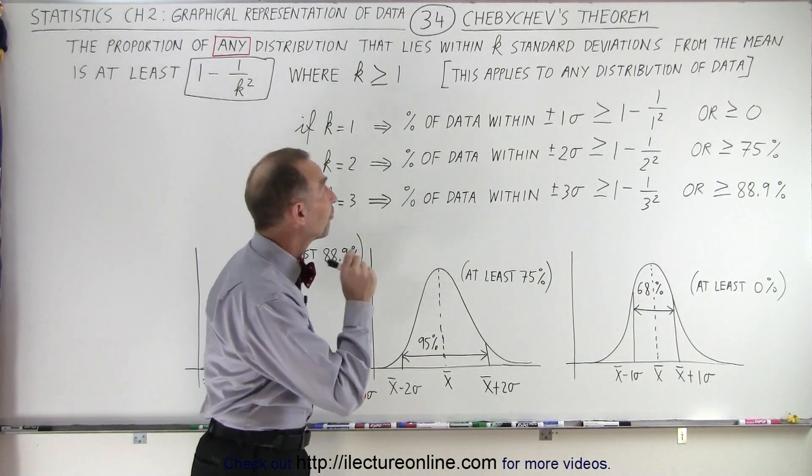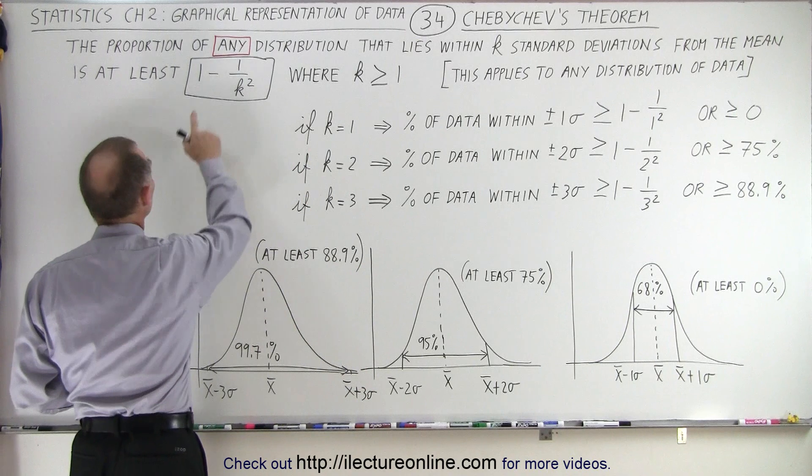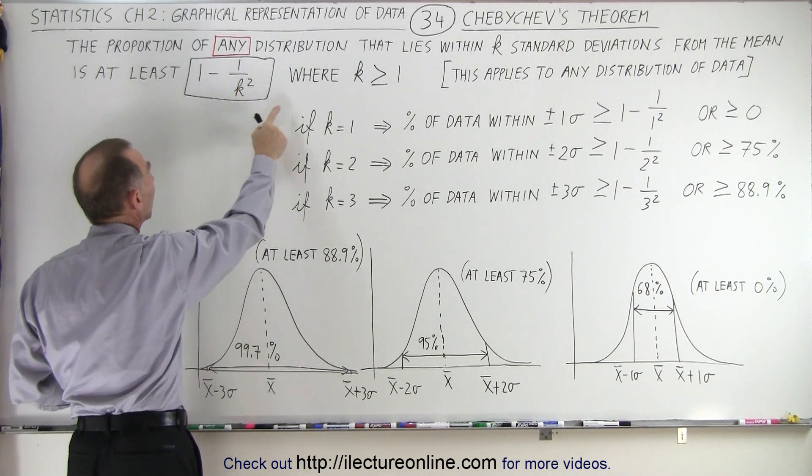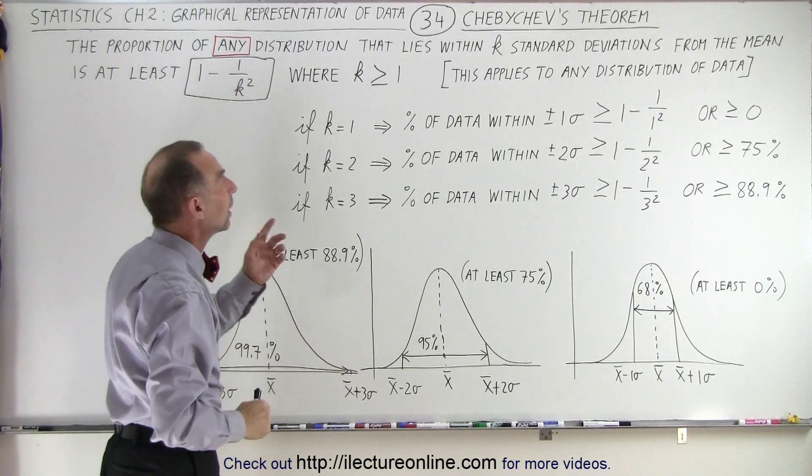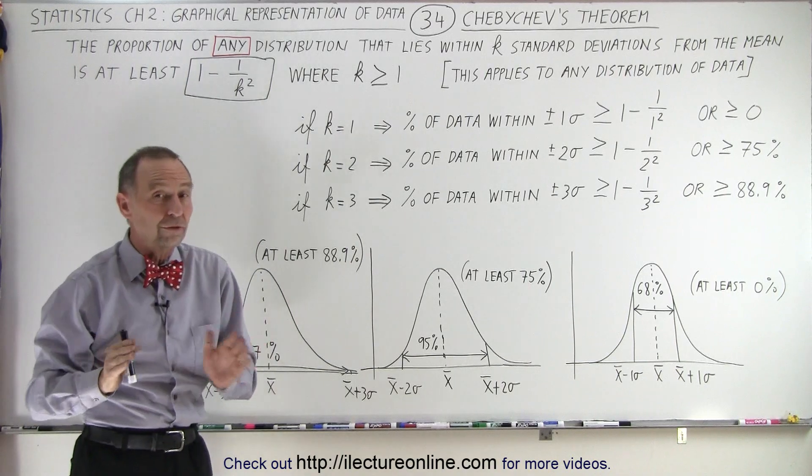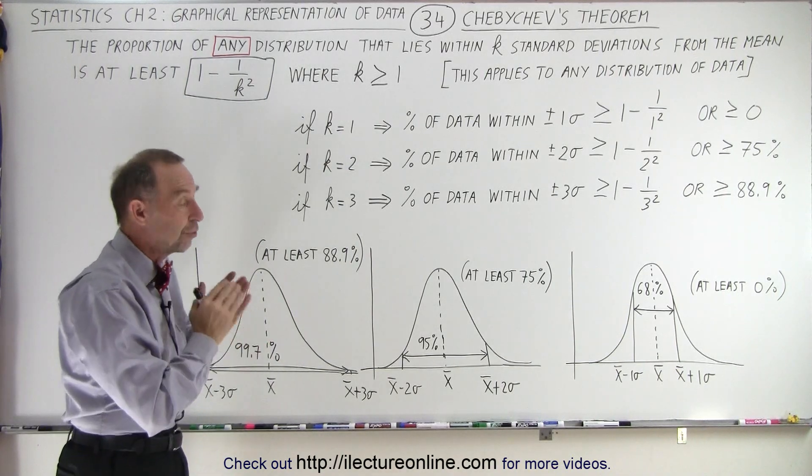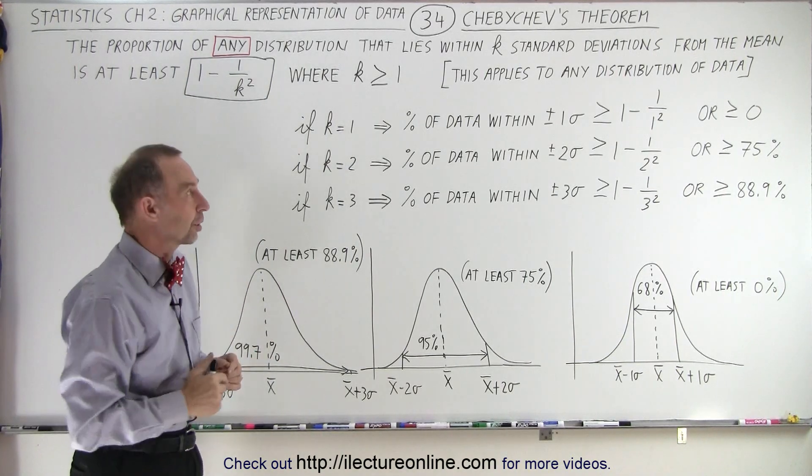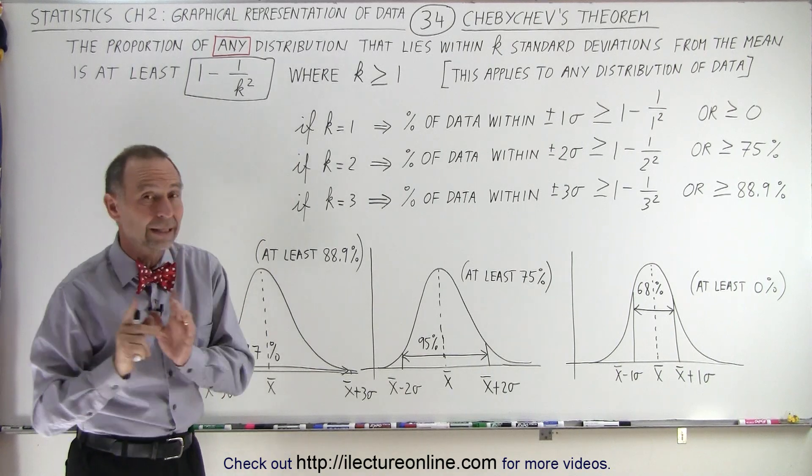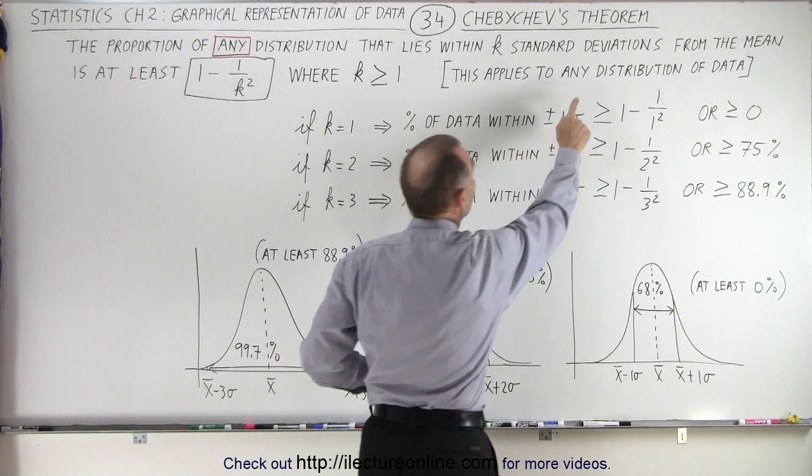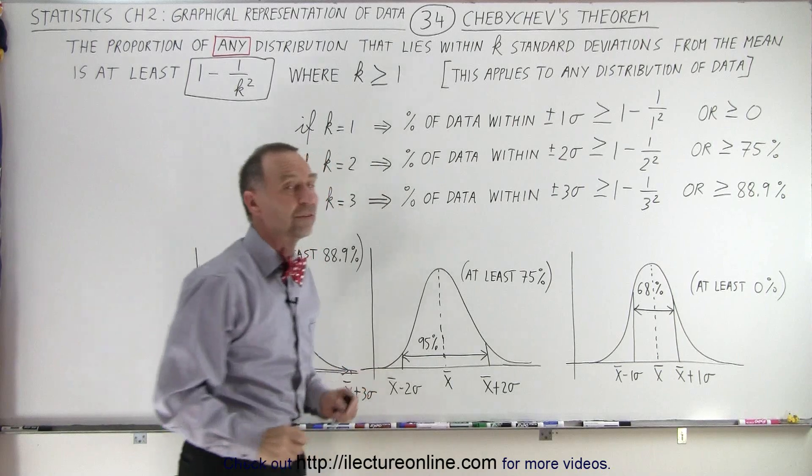That many standard deviations from the mean is at least 1 - 1/k², where k ≥ 1. So it doesn't work for k less than one, but from one and greater, it does work. The key is this applies to any distribution of data.